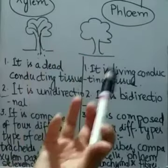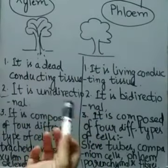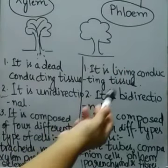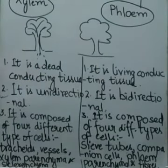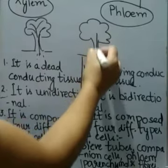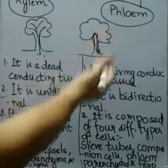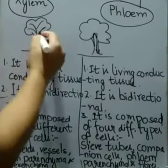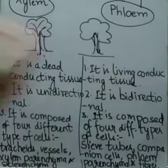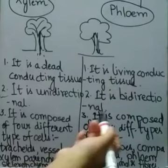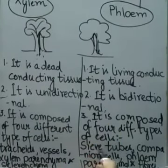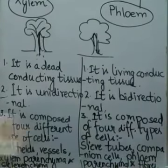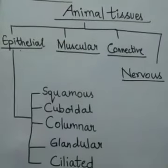Plants transfer sucrose to all parts through the tissue known as phloem. Phloem is a living conducting tissue, unlike xylem, and it is bi-directional, meaning it moves both downwards and upwards. Xylem is unidirectional, moving only upwards. Phloem tissue is composed of four types of cells: sieve tubes, companion cells, phloem parenchyma, and phloem fibers.